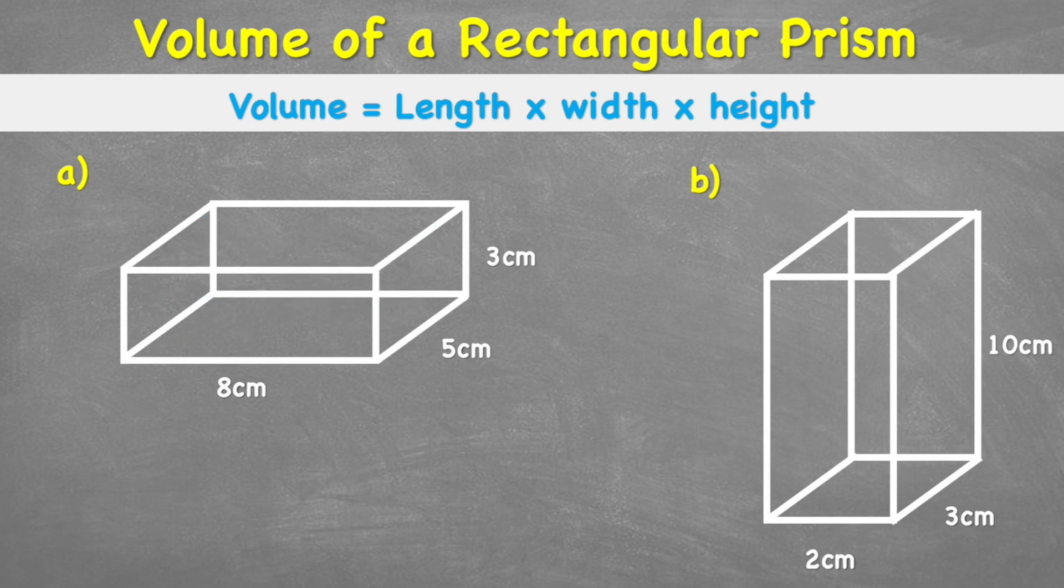And to find out the volume, we have this really nice easy formula, length times width times height. And because we are using only multiplication, and multiplication is commutative, it actually does not matter which way round we do the calculation, we will still get the same answer.